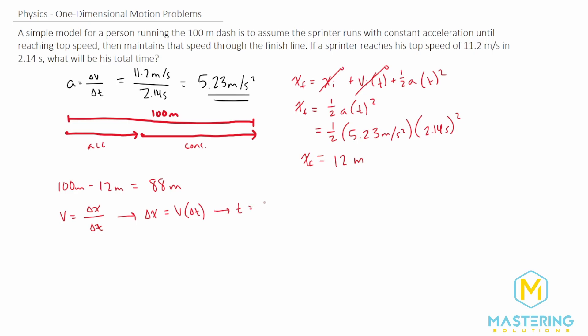Move v over, so t equals delta x over v. We can figure out the time for this section because we know how far he has to go and how fast he'll be going. We have both variables.